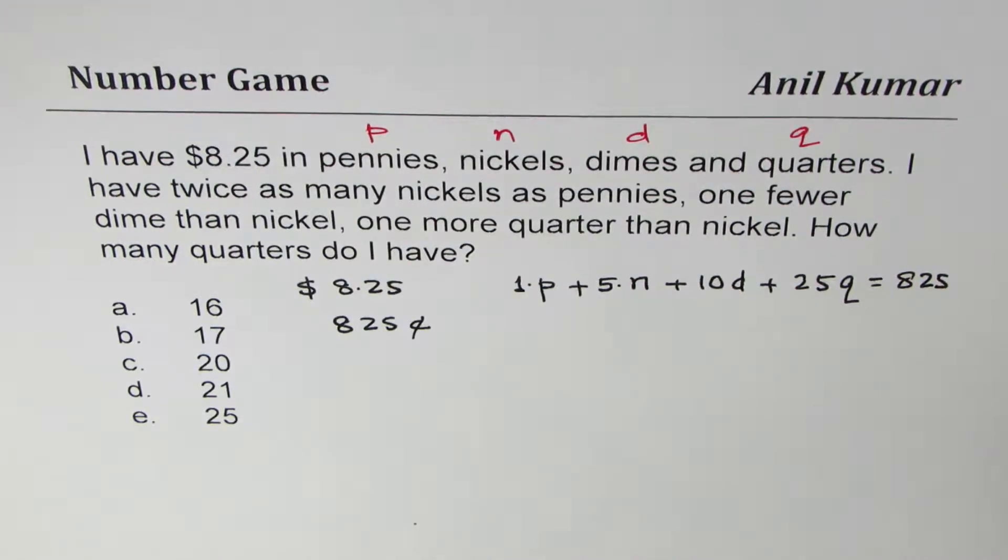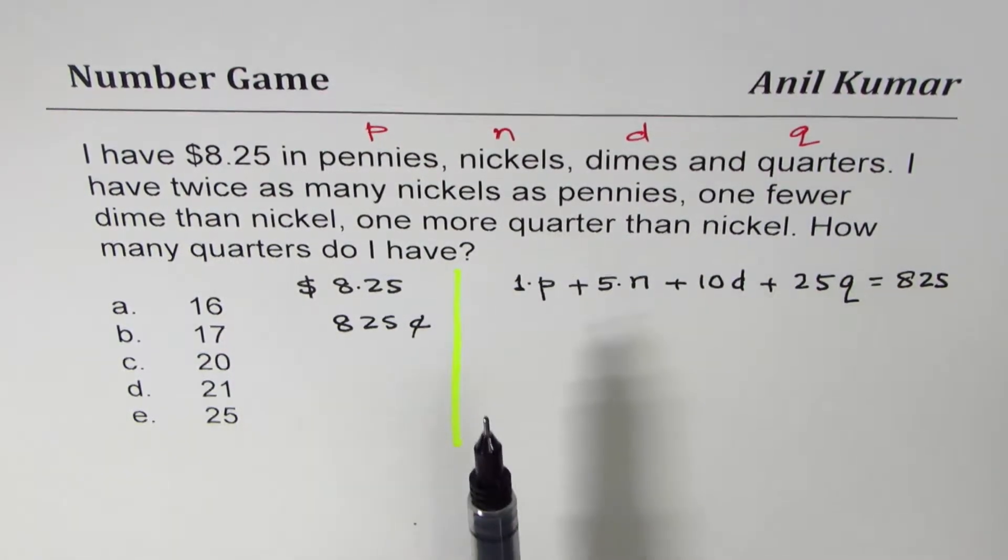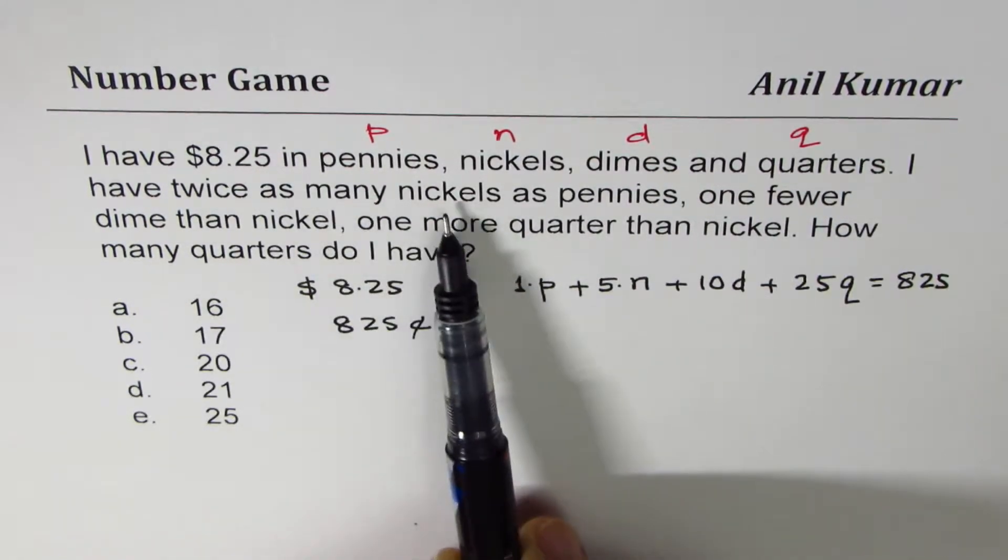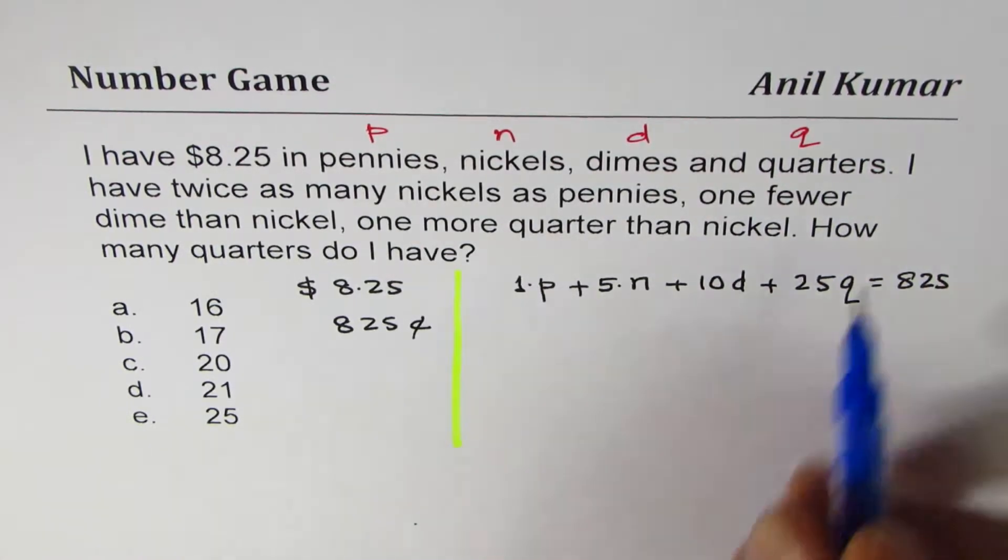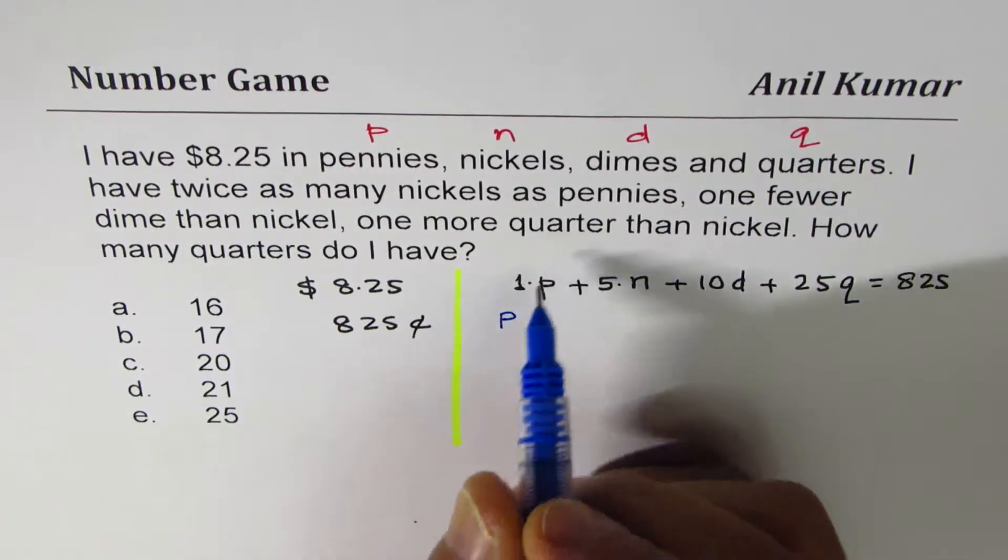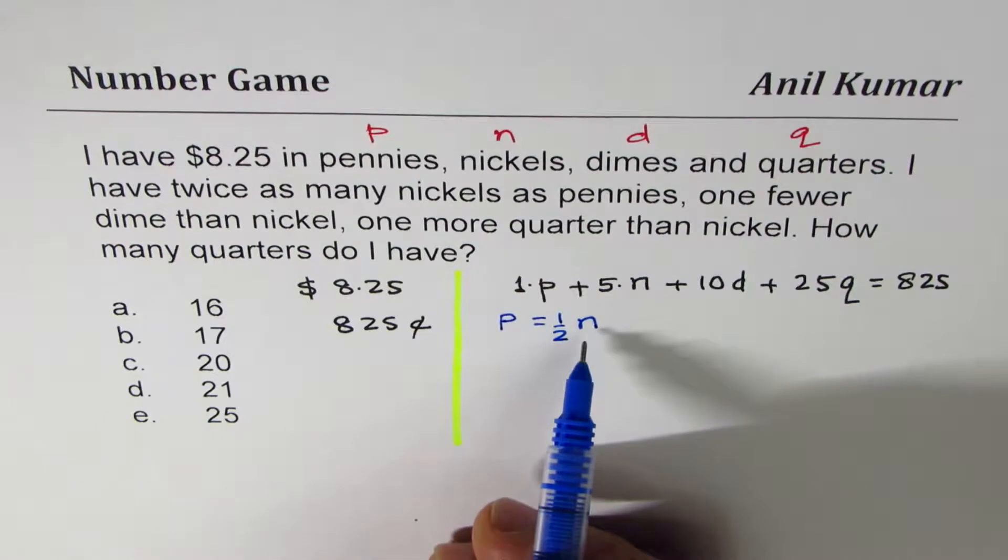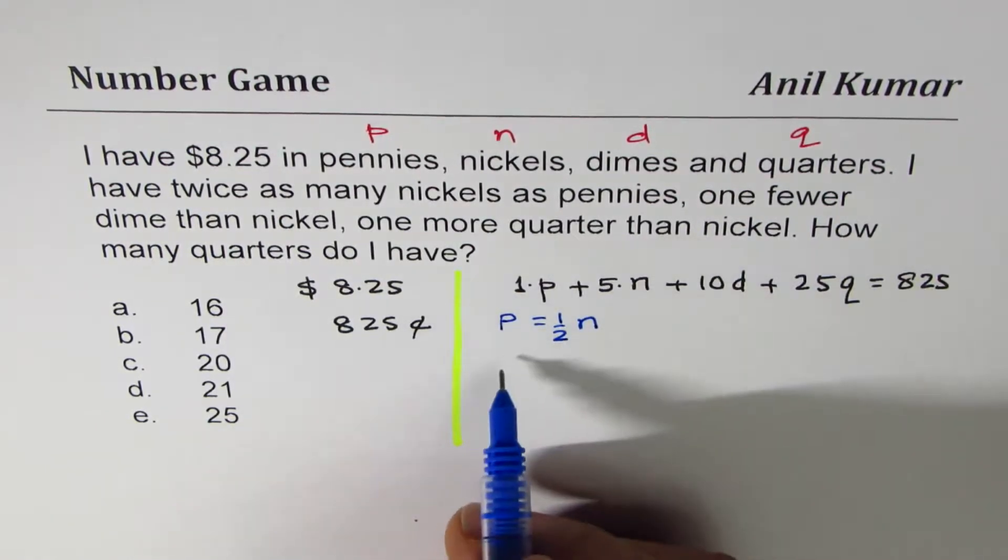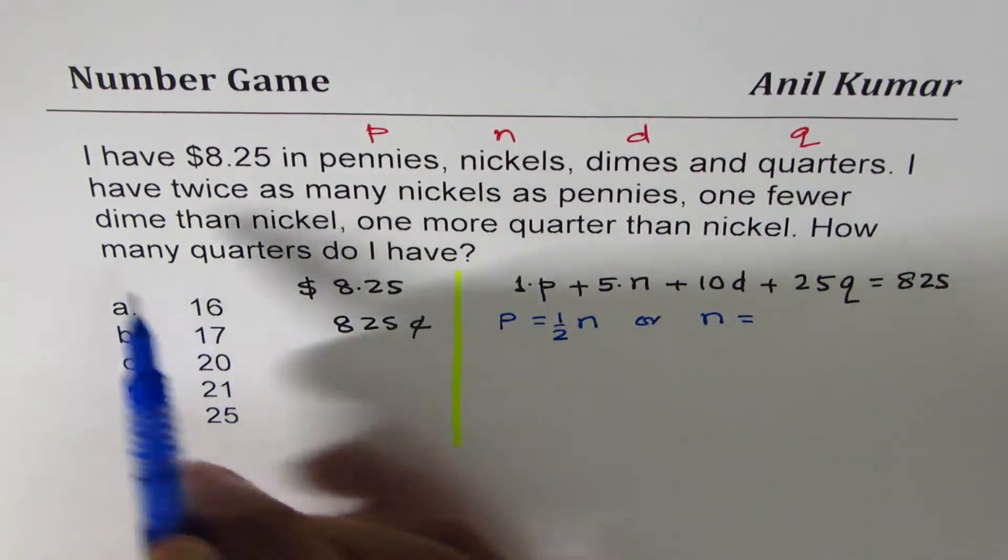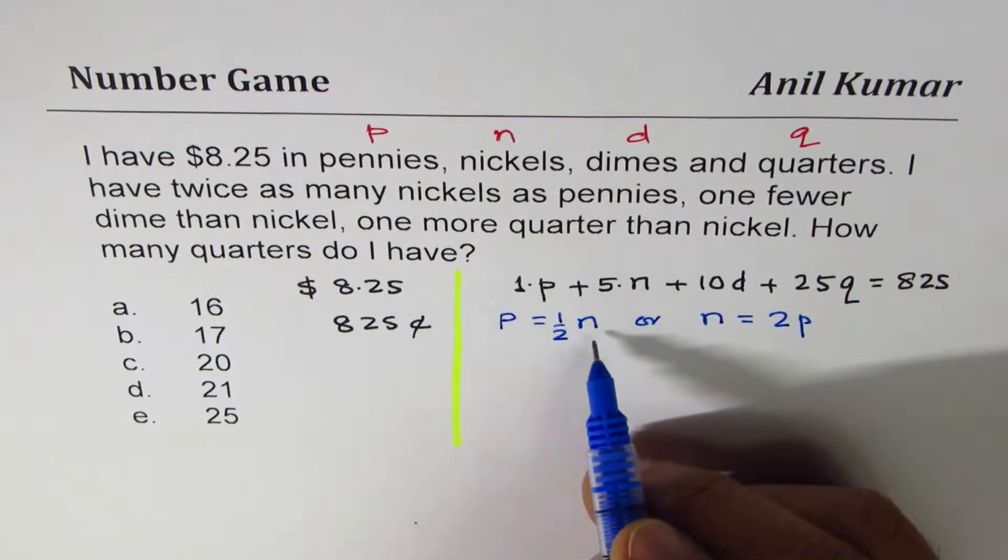We have an equation which has four variables. We have avoided decimals by converting everything to cents. Four variables means we need four equations to solve. How do we get these four equations? Let's read further. I have twice as many nickels as pennies. So the first equation, I have twice as many nickels as pennies. Nickels are more, so you could say N equals 2P, which I wrote as pennies are half of nickel. Let me call this as my equation one.